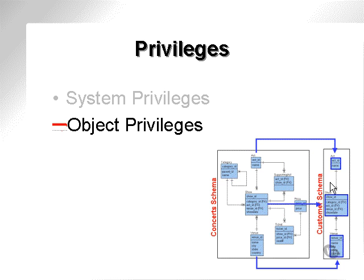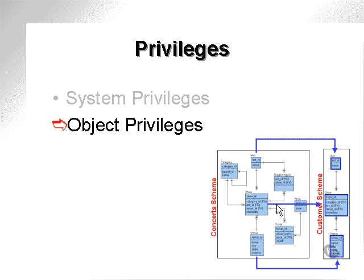There are a number of ways in which access could be allowed from the customer schema into the concert schema using those three tables. One way is by using an object privilege and granting a privilege from the concert schema to the customer schema to allow access — for instance, to the act table, or creation of views either in the concert schema, or synonyms, or simply duplication of the tables into the customer schema. Two of the most common ways is to create synonyms on the tables in the concert schema and allow access from or to the customer schema, or to simply grant access privileges from the concert schema to the customer schema.